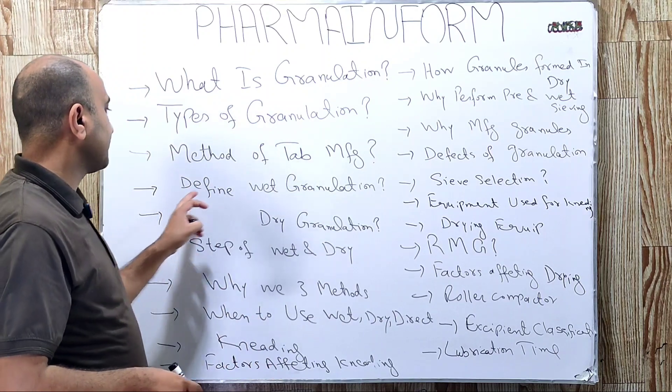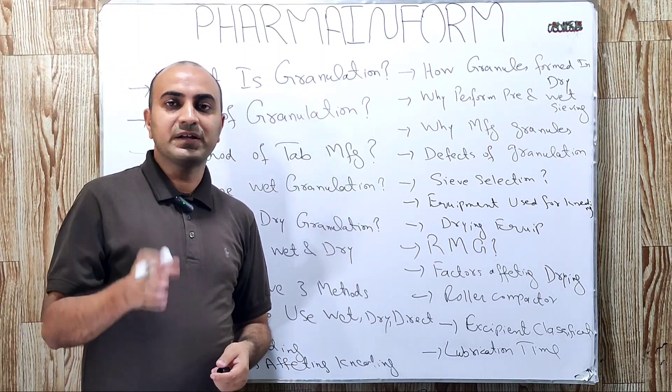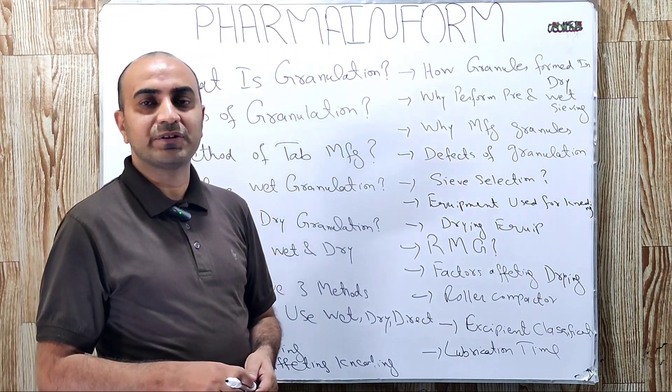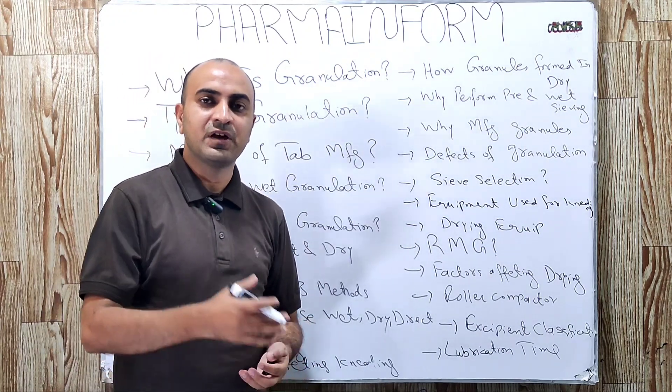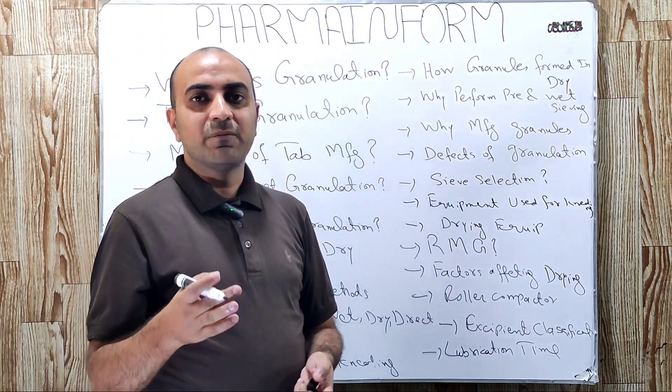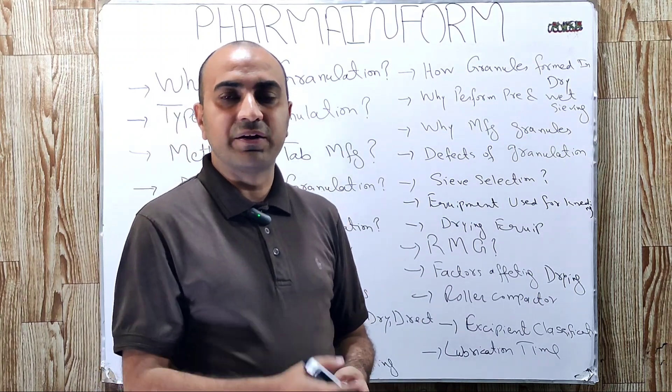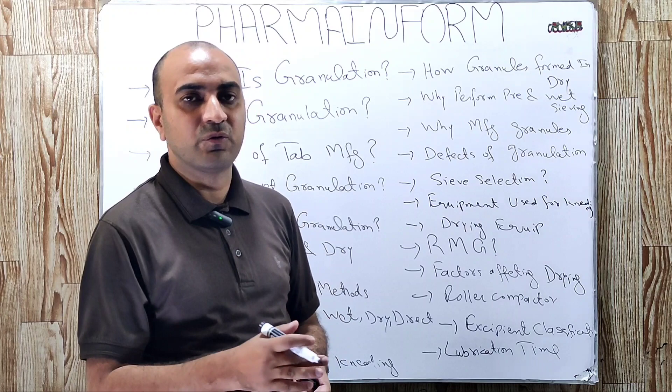The next question is define wet granulation. Wet granulation is the process in which we convert our powders into agglomerates or granules by using binder solution or solvent.